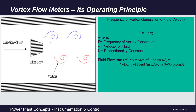Coming to its operating principle: whenever an obstacle is placed in a flowing fluid path, vortices are generated alternately on both sides of the obstacle — shown here in blue and red. The frequency of vortex generation is directly proportional to the fluid velocity and is independent of all other parameters. That is: frequency F = K × velocity V.